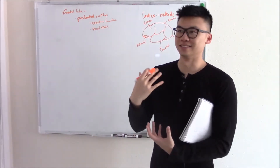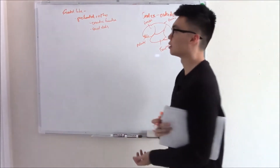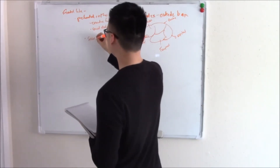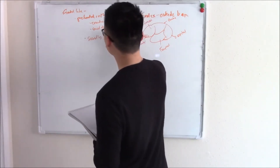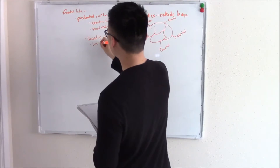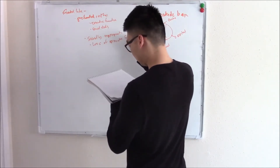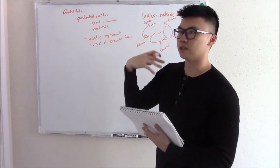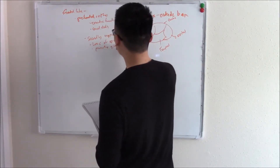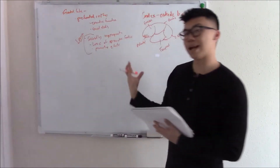The prefrontal cortex is not as developed in teens — that's why we do the dumb things we do. If you have a lesion there, you'll see signs like doing and saying things that are not socially appropriate, loss of executive function, and if it's severe enough, your primitive reflexes can actually come out.